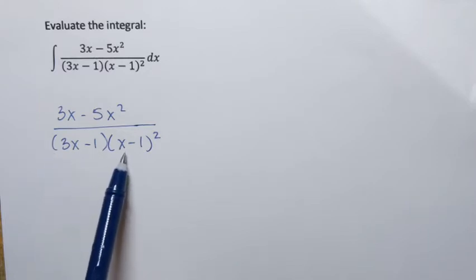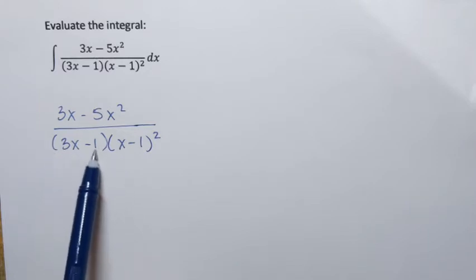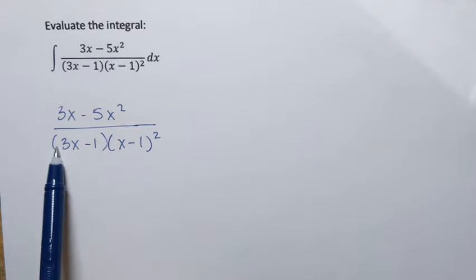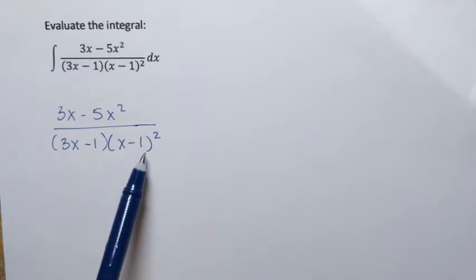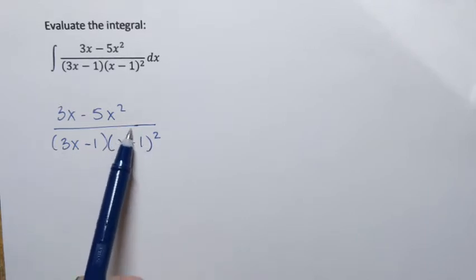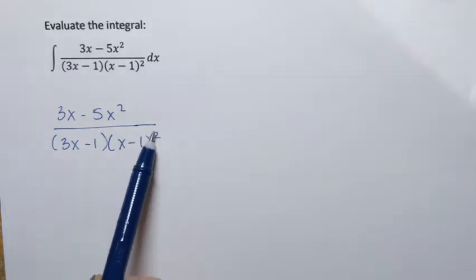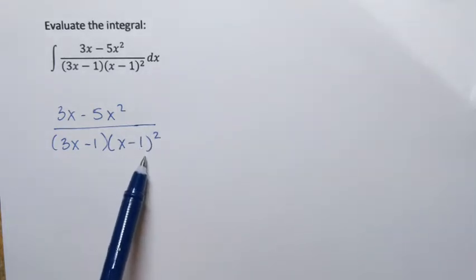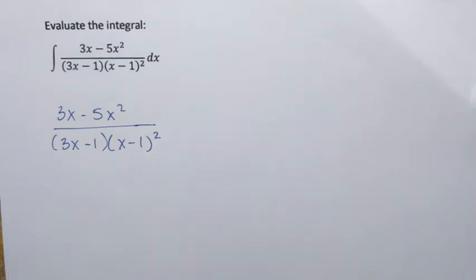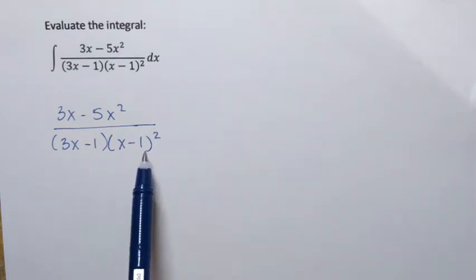I have two linear factors. So 3x minus 1 is a linear factor, and x minus 1 is a linear factor. However, in this case we have a repeating factor. This power of 2 means that I have x minus 1 twice — there are two factors like that — so I have a repeated linear factor.